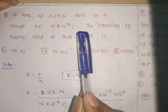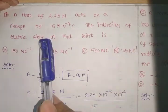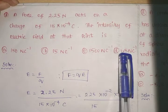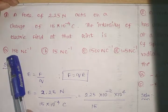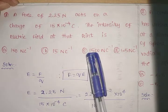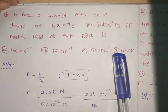This is the data they have given, and they are asked that the intensity of the electric field at that point is: option A - 150 Newton per Coulomb, B - 50 Newton per Coulomb, C - 1500 Newton per Coulomb, D - 1.5 Newton per Coulomb.